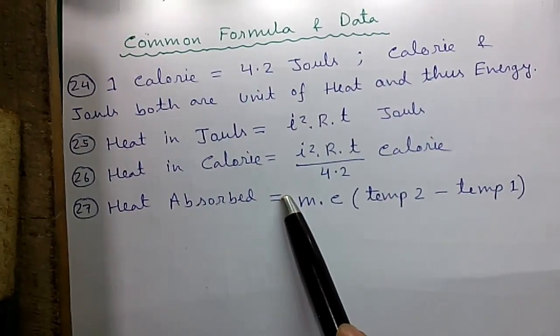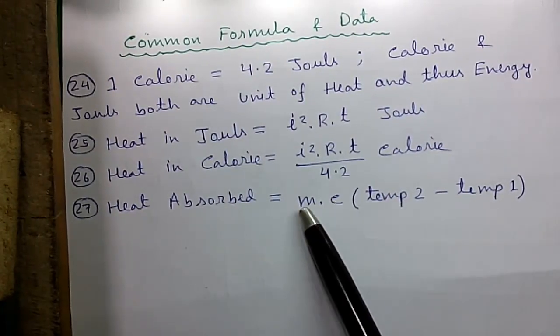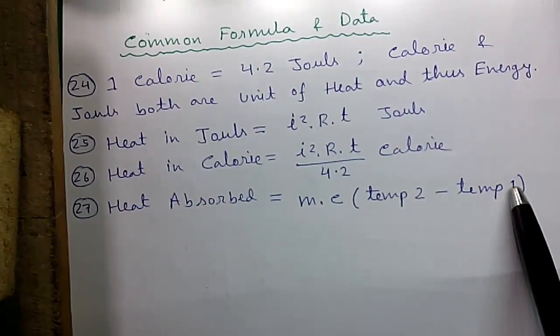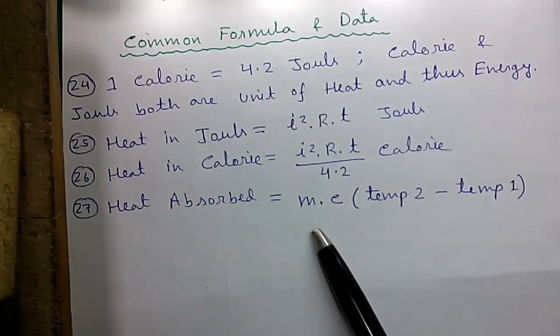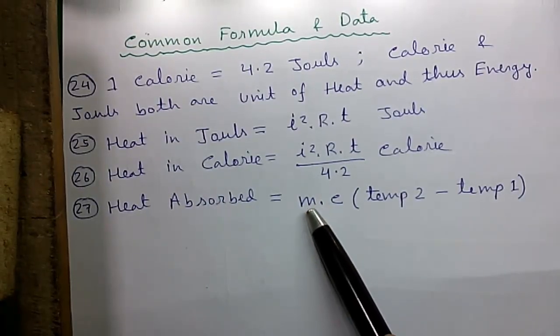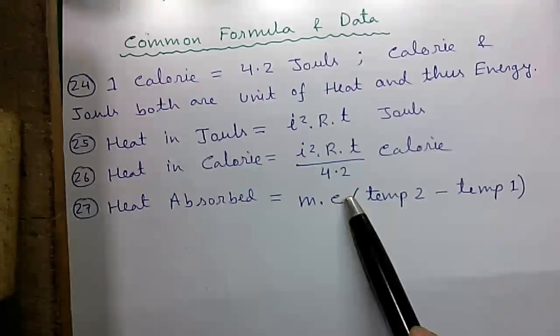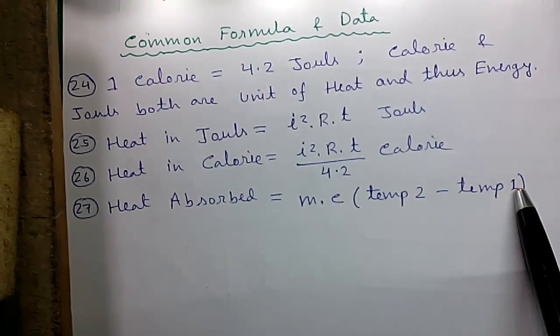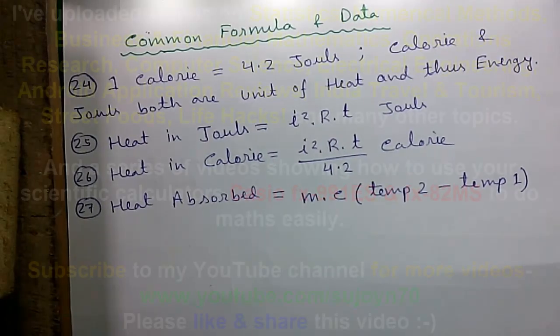Heat absorbed by a body or substance equals M into C into (temperature 2 minus temperature 1), where M is the mass of the substance, for example water, and C is the constant. Temperature 2 is the final temperature and temperature 1 is the initial temperature.